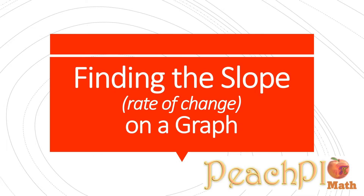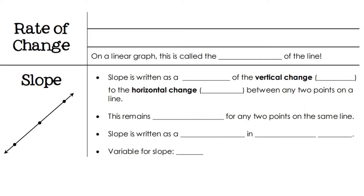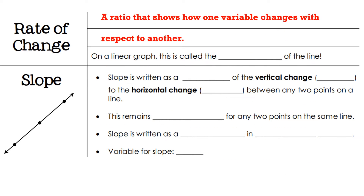In this lesson we're looking at finding the slope of a graph, also known as the rate of change. A rate of change or slope is a ratio that shows how one variable changes with respect to another. On a graph, those variables would be x and y. On a linear graph, this ratio is called the slope of the line.